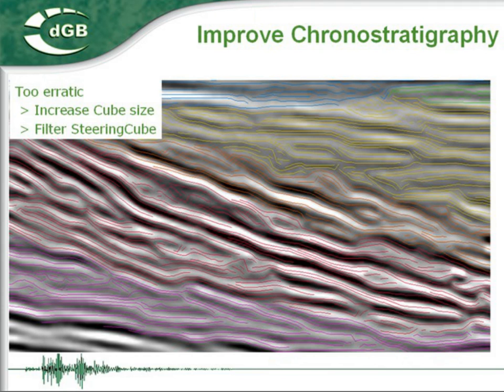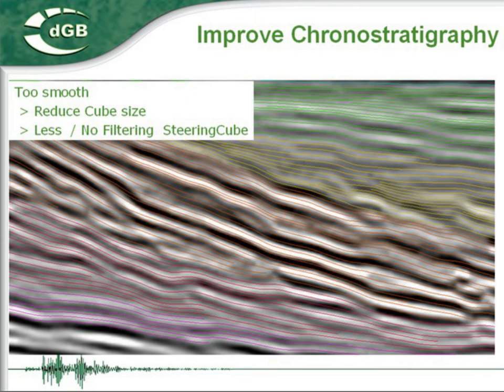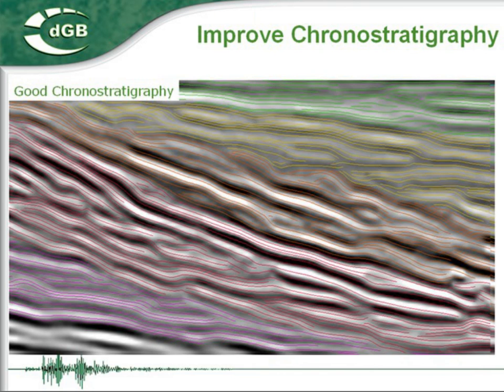A grounor stratigraphy that consists of many small unconnected grounor stratigraphic horizons can be improved by recalculating the steering cube with increased taper parameters. Alternatively, you can smooth the existing steering cube with a median filter. If the steering cube is too smooth, the grounor stratigraphic horizons are no longer following the seismic events in detail. In this case, recalculate the steering cube with a reduced taper parameter or reduce the filter settings of the median filter.